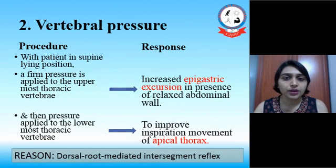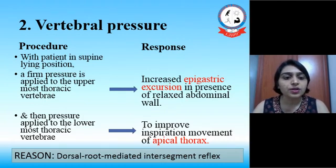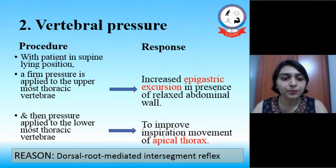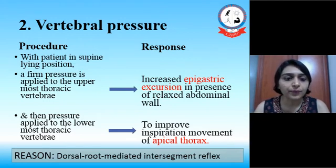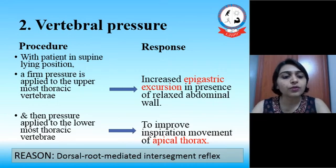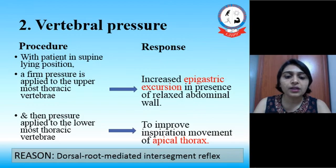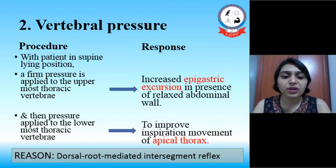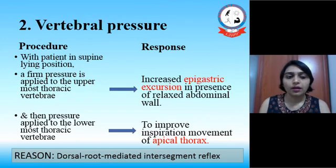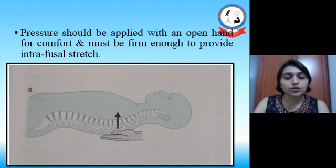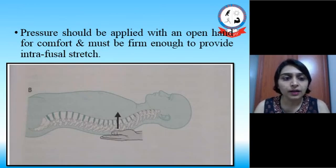The next technique is vertebral pressure. With the patient in supine lying position, a firm pressure is applied to the uppermost thoracic vertebrae. The response is an increase in epigastric excursion in the presence of a relaxed abdominal wall. Applying pressure to the lowermost thoracic vertebrae may find improvement in inspiration in the apical thoracic area. The reason for this is a dorsal root mediated intersegmental reflex. Pressure is applied with an open hand for comfort and must be firm enough to provide intrafusal stretch.